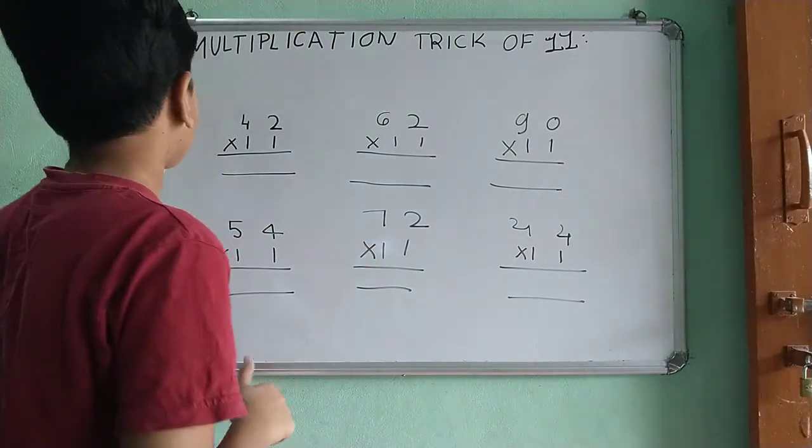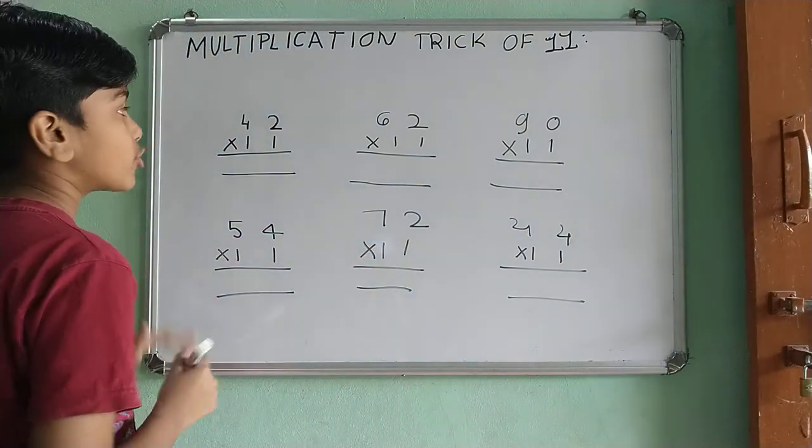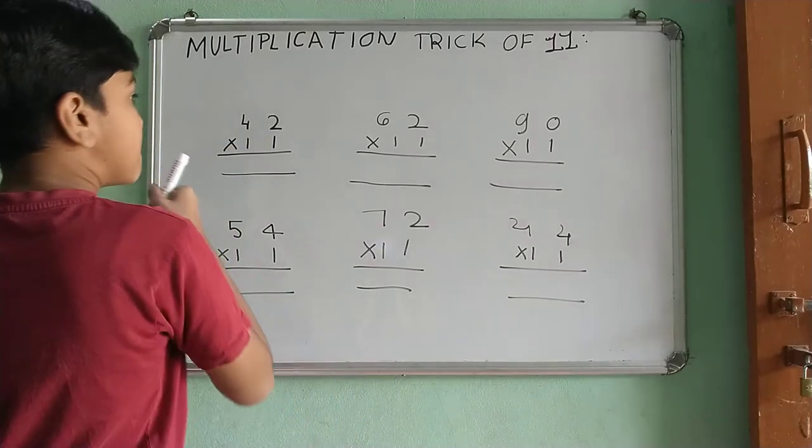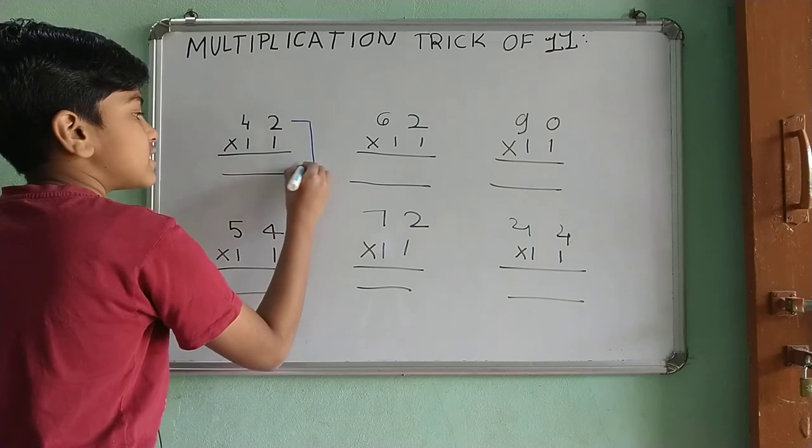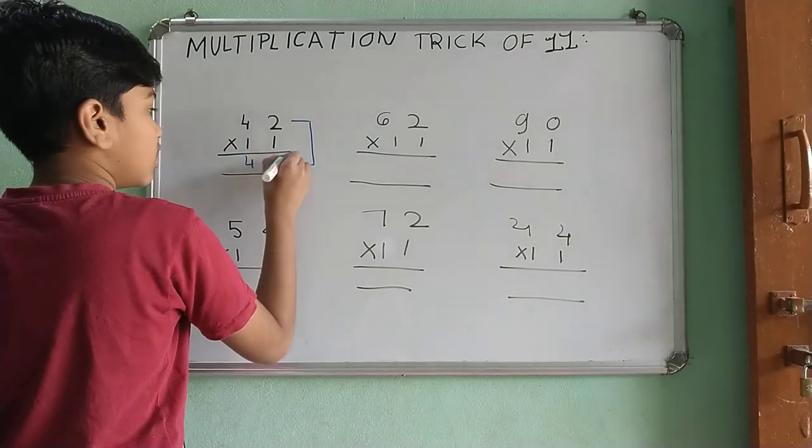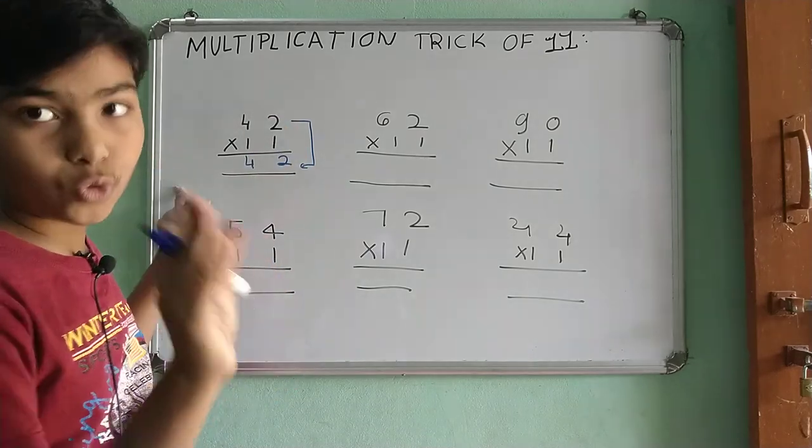First example, 42 multiplied by 11. Now, in this case, what if you do, the upper digit you see is 42, bring it down as this. And keep it down of it like this, 4, 2 down of it. Is it the answer? No.